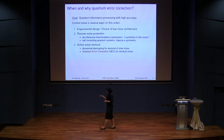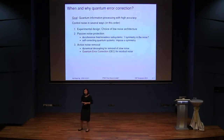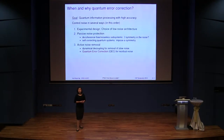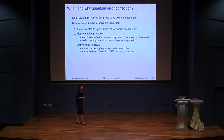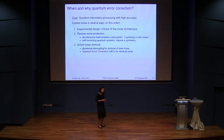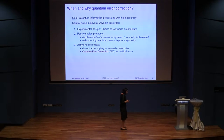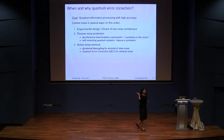Most of the time you're not going to be so lucky, so what happens is that you try to think about ways of imposing the symmetry. Ideas of self-correcting quantum memories, effective Hamiltonians where the ground state is actually noise-free — these are ideas that fall within this category.